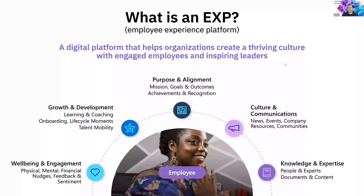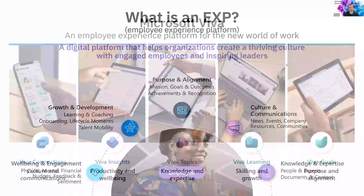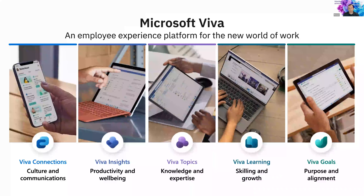That is what Microsoft Viva is about — delivering on those capabilities for organizations. Viva is composed of five modules: Connections for culture and communications, Insights for monitoring productivity and well-being, Topics for building out knowledge and expertise, Viva Learning for the learning management piece, and Viva Goals — not yet out but coming — for goal and OKR tracking. Today we're going to focus on the Connections and Topics modules.